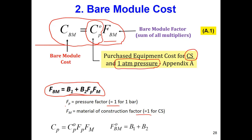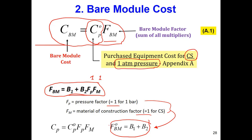When both Fp and Fm are equal to one — that is, at one atmosphere or one bar and carbon steel — the bare module factor FBM0 simplifies. Since Fp and Fm are both one, the equation becomes FBM0 = B1 + B2, which we write with a zero subscript to indicate this is the base condition.